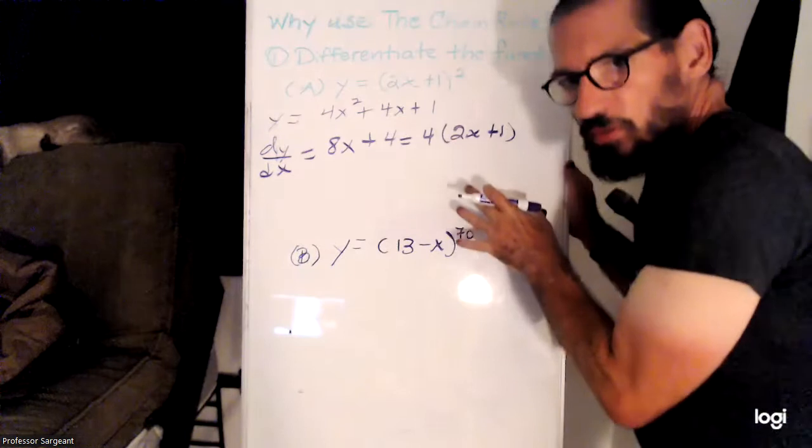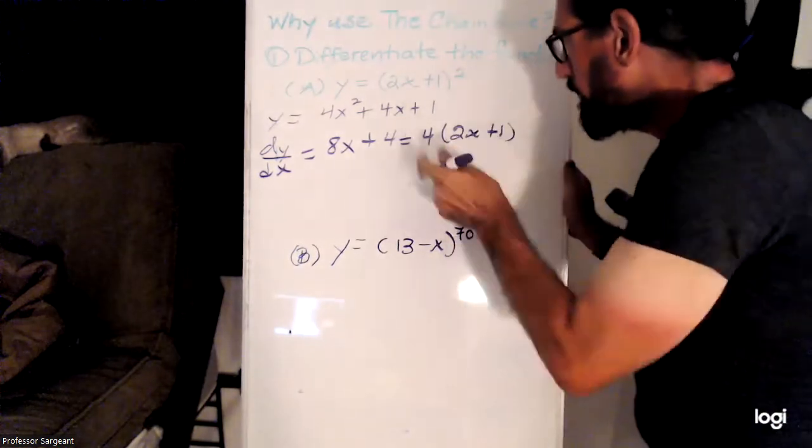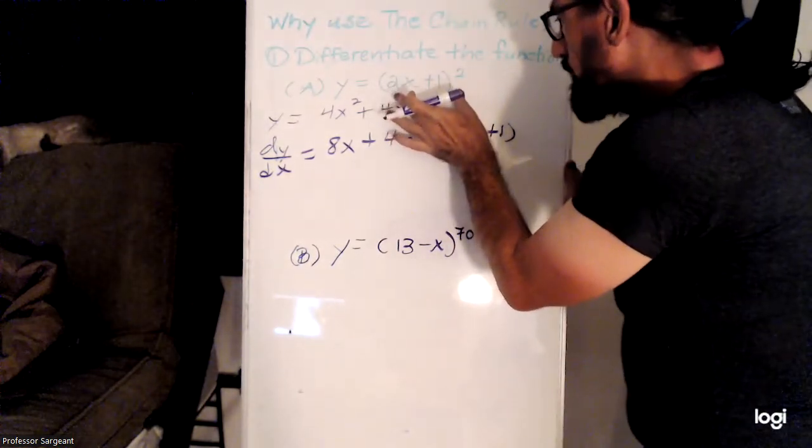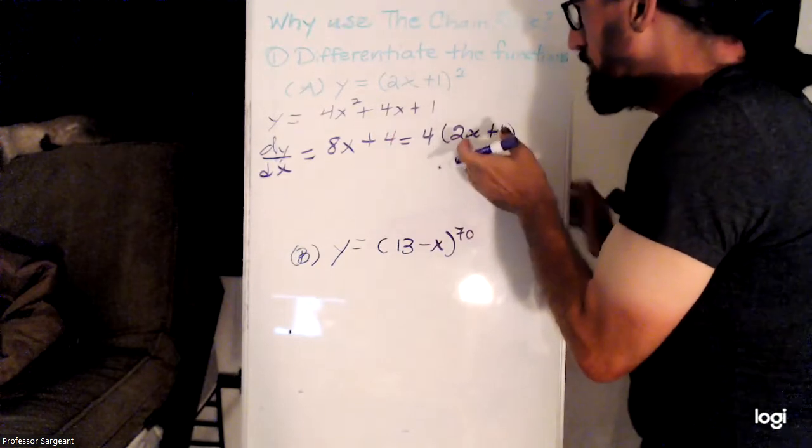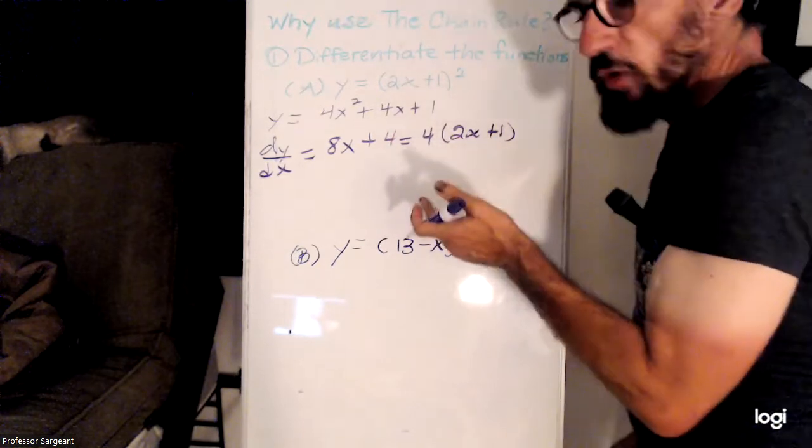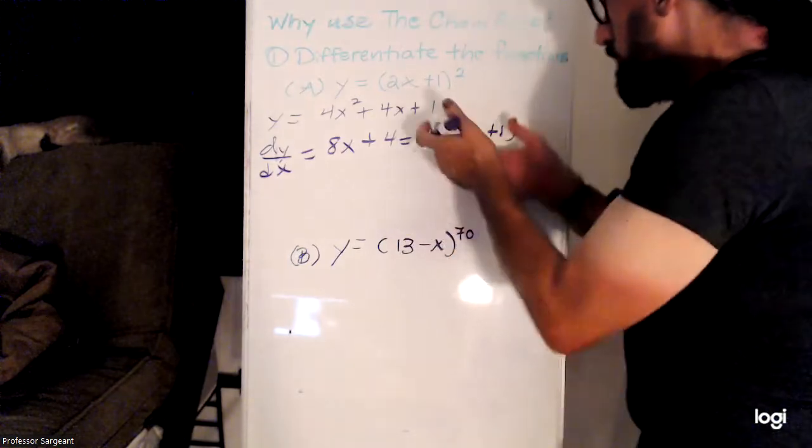So this should suggest another option. If this had been x squared, then we would have had an answer of the derivative was 2x. Instead...